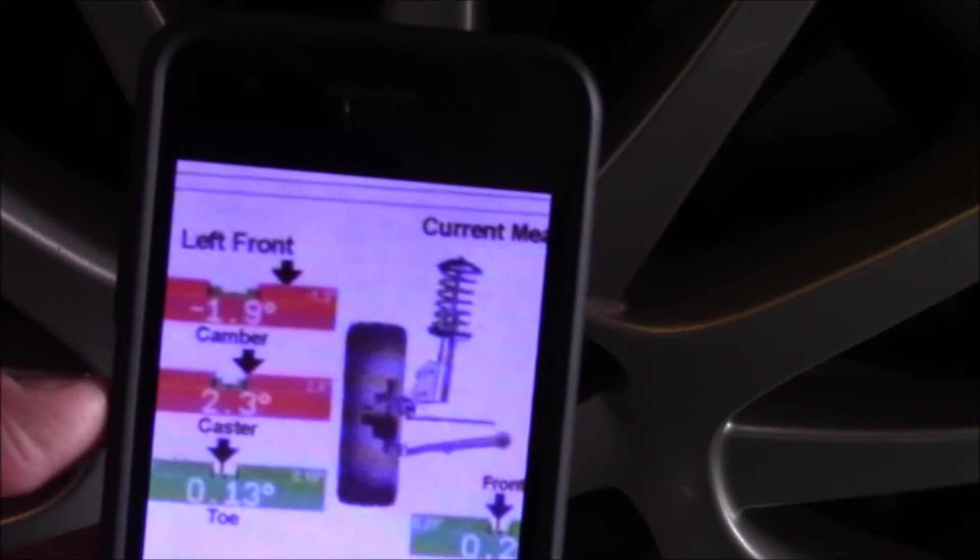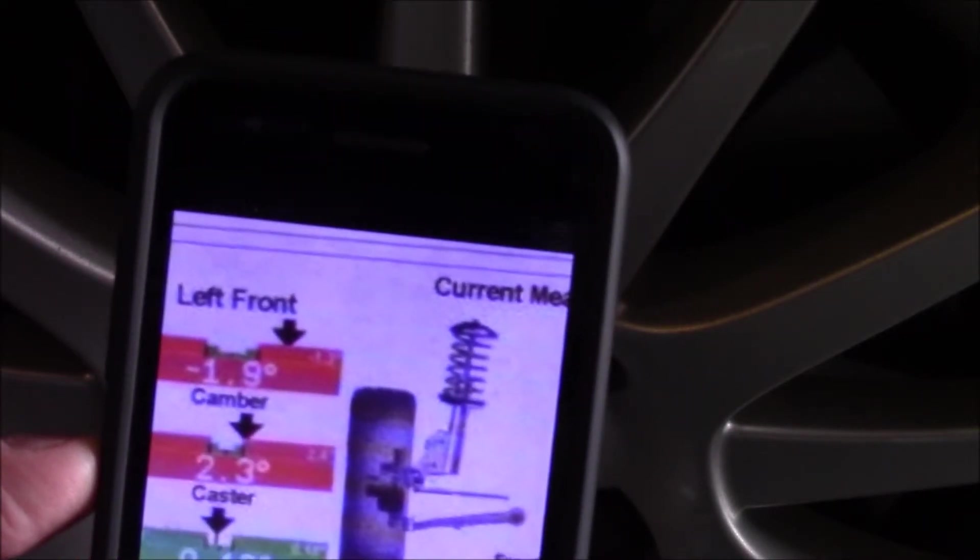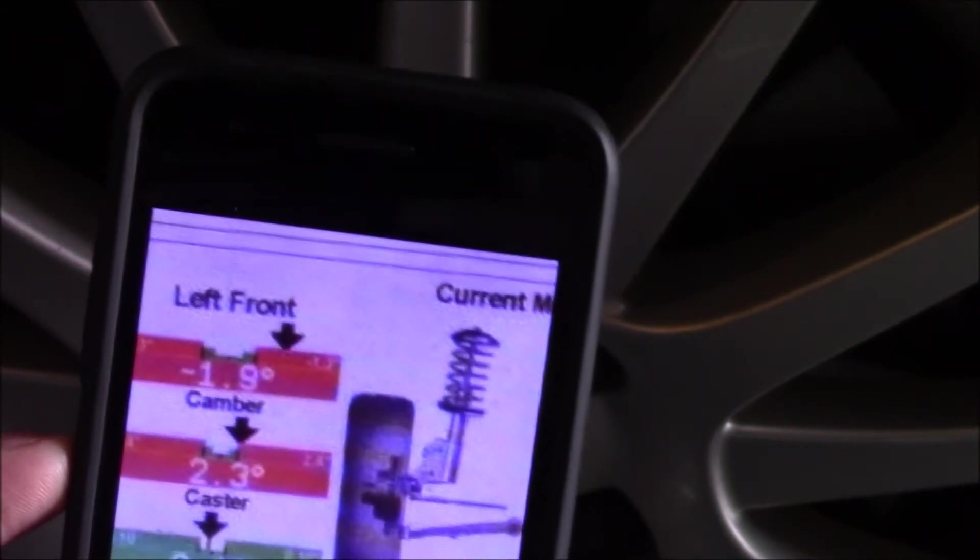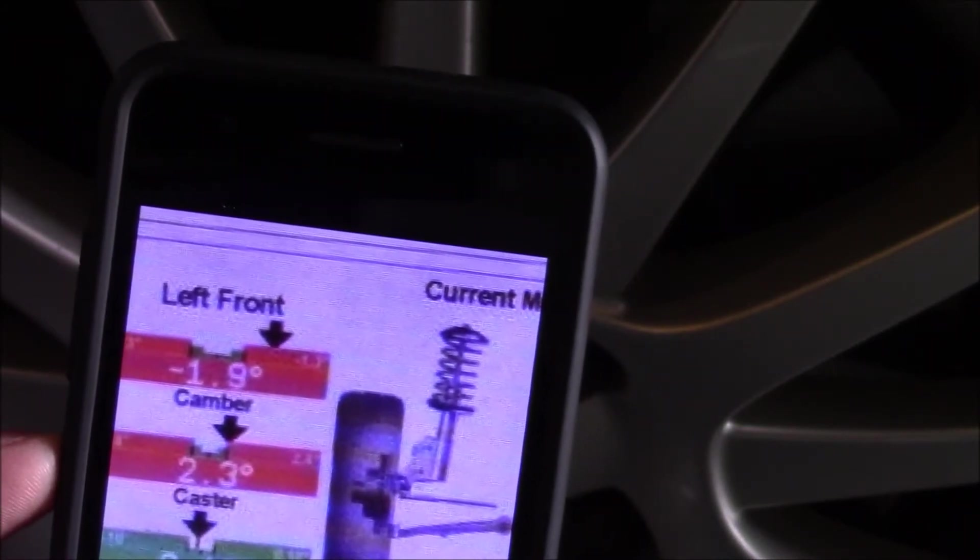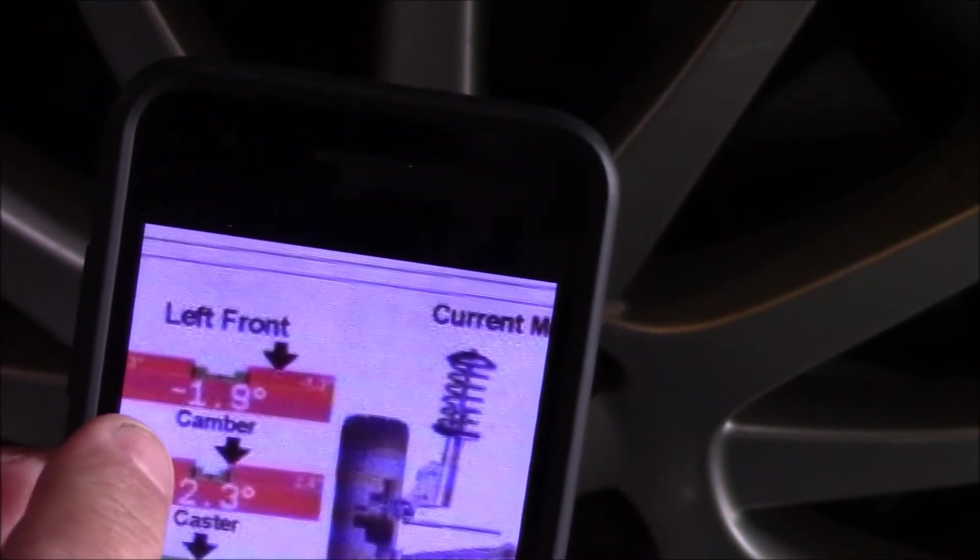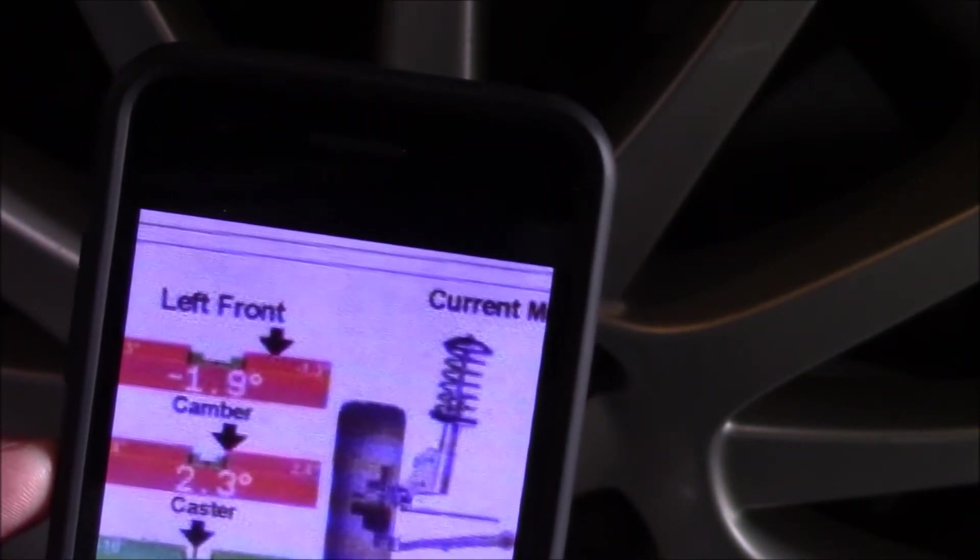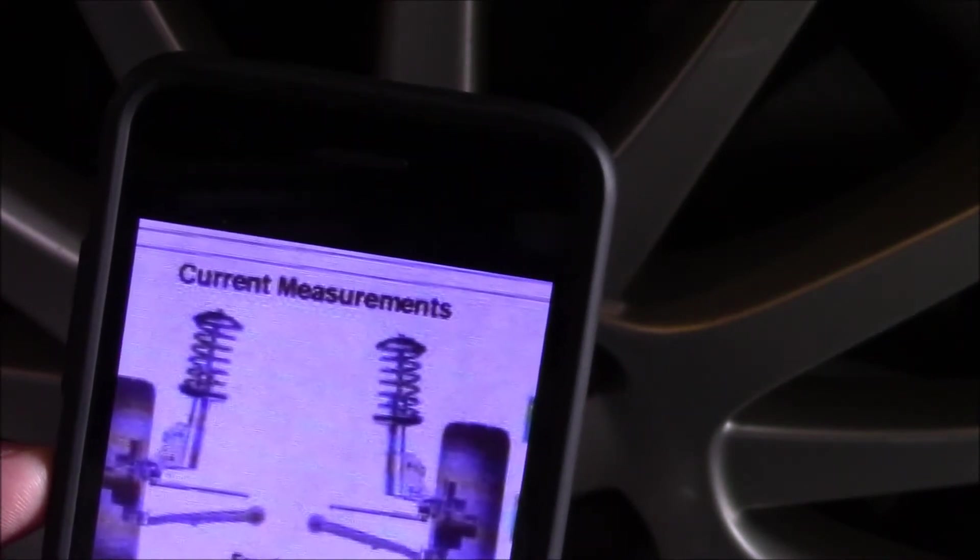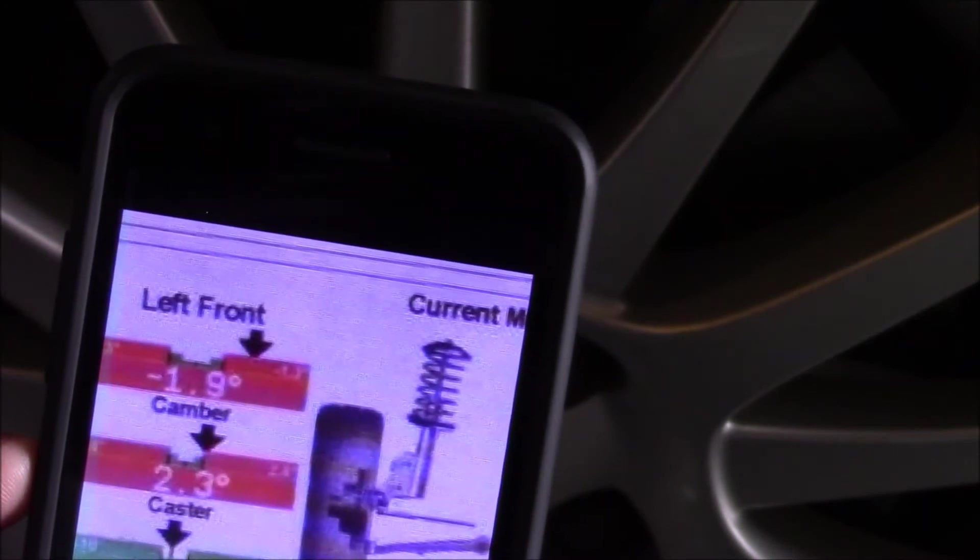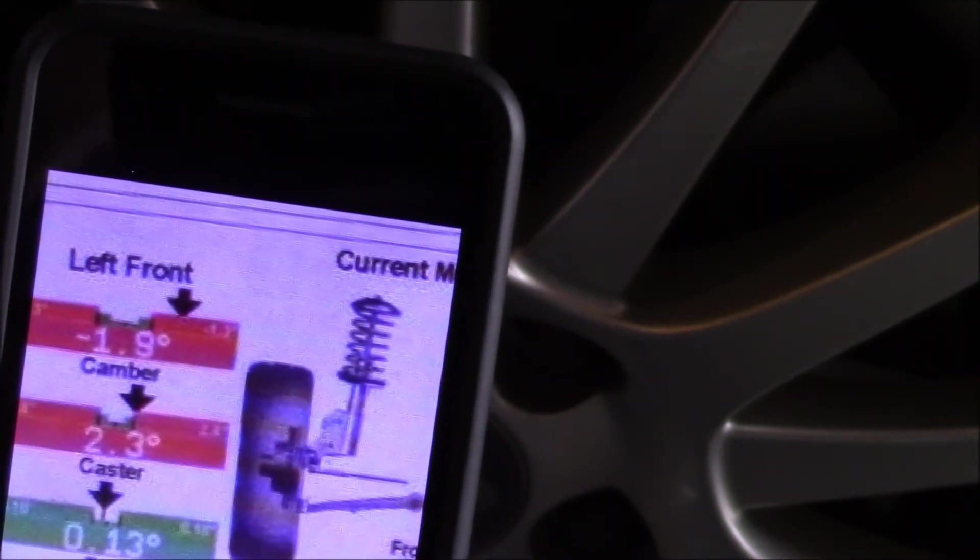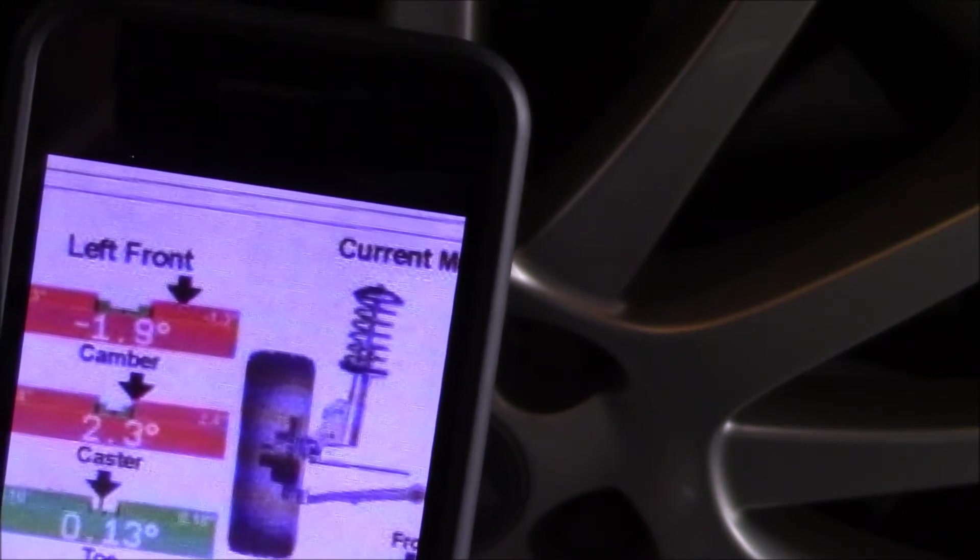Fortunately, I had the alignment place let me take a picture of where they couldn't get it. This is what they were able to achieve without a camber bolt in there: negative 1.9 degrees, so almost two degrees. What it should be is between negative one-half degree camber and negative one degree camber—that would be acceptable.